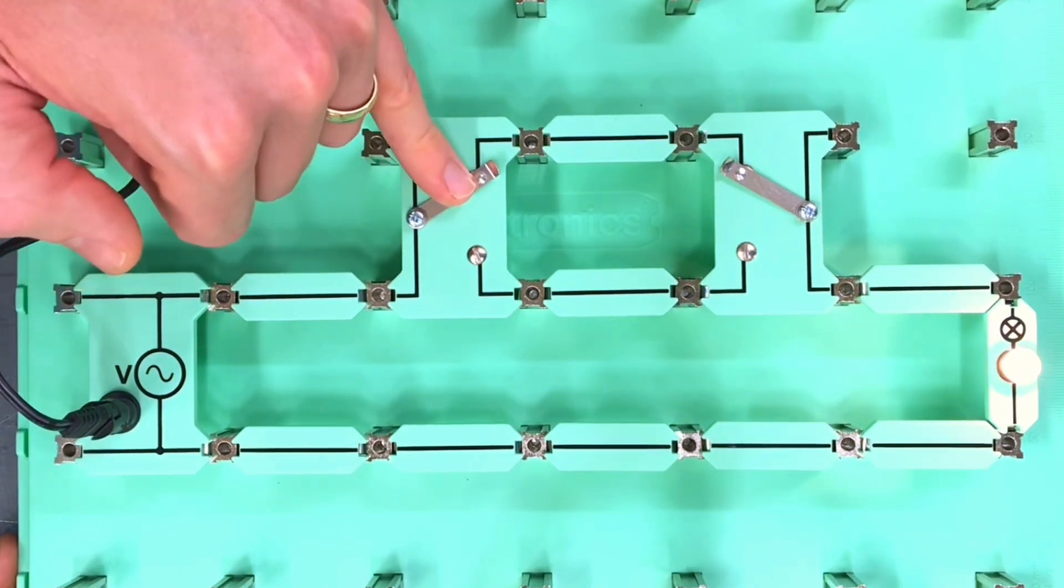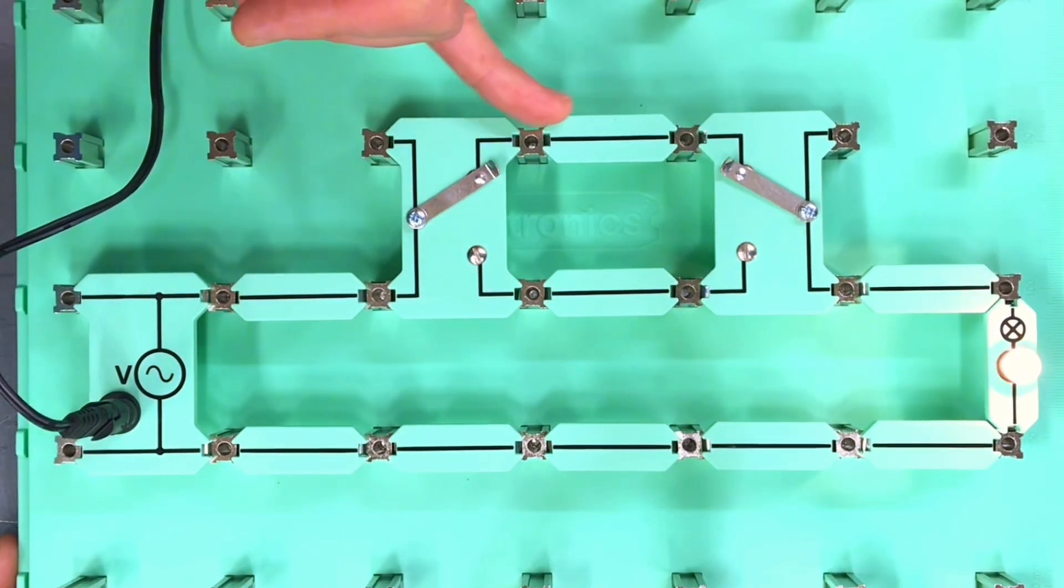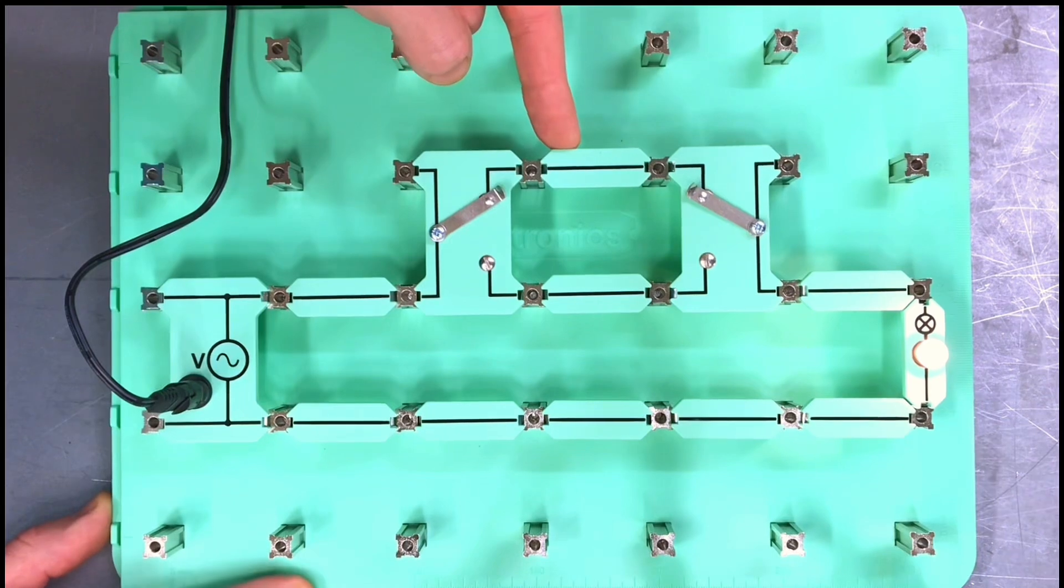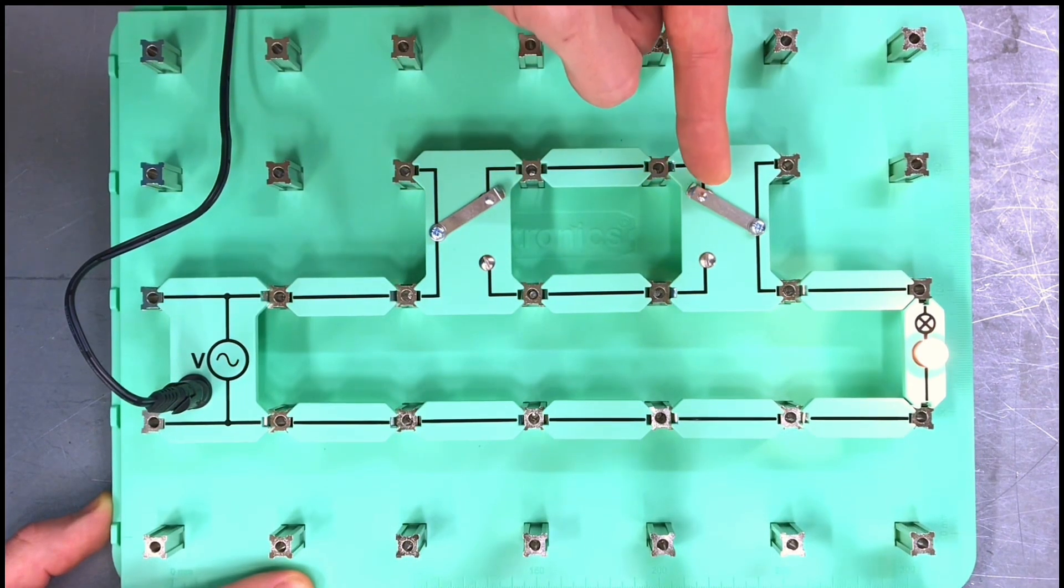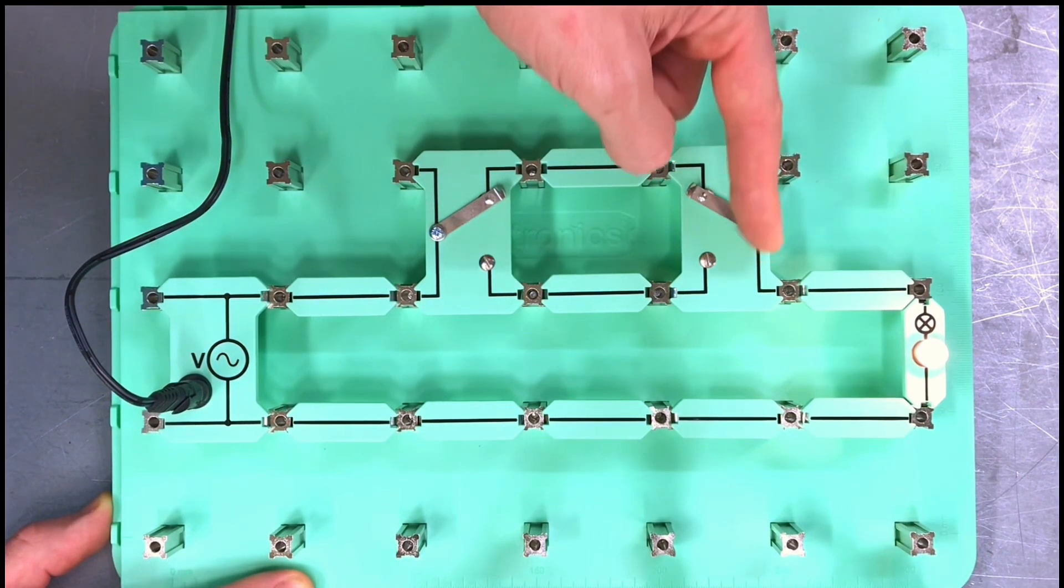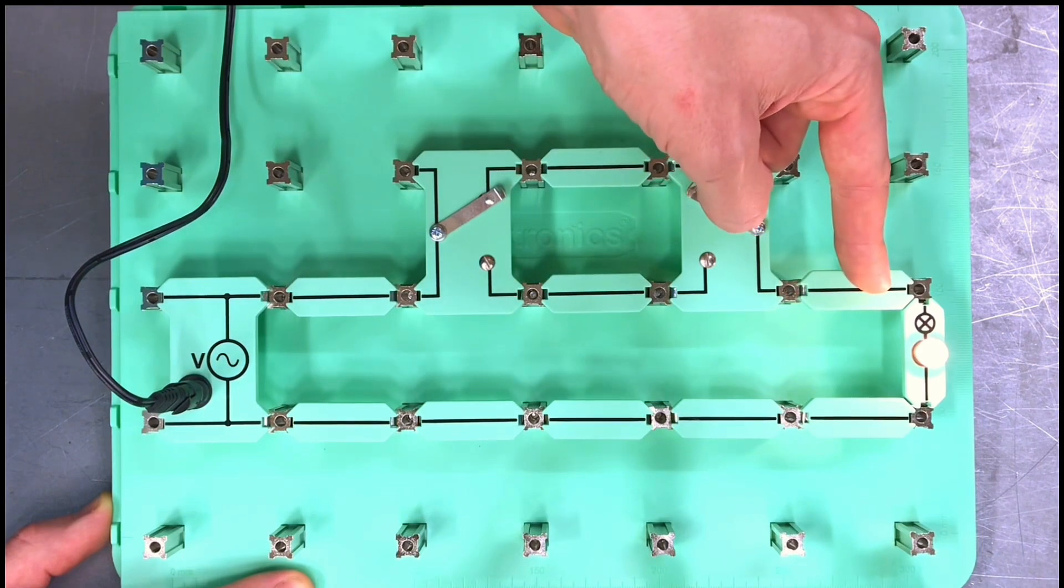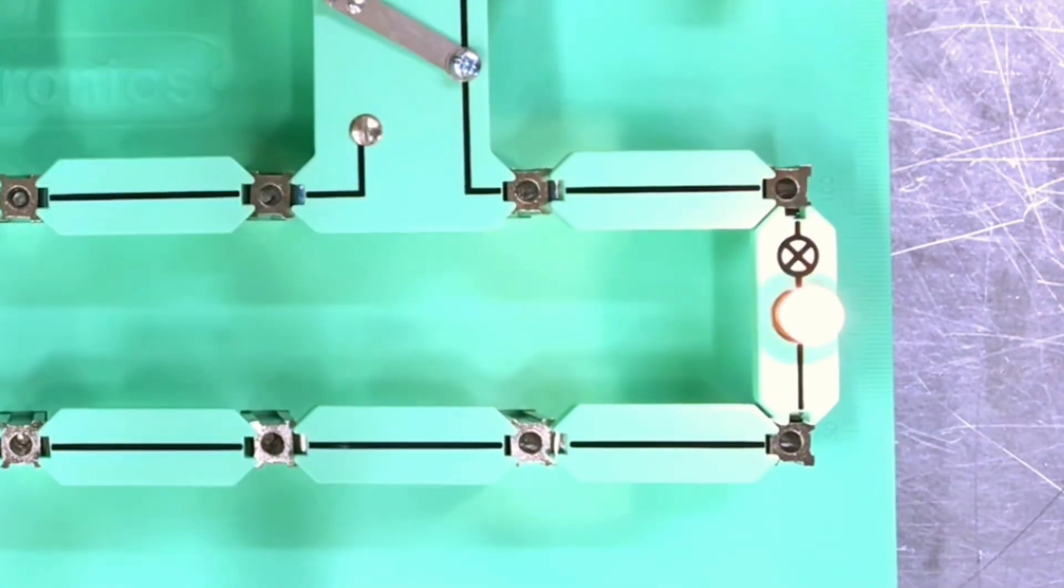So then the current can continue down here onto this switch, passes through that contact onto the common terminal, which then connects the switched line conductor and operates the lamp and turns it on.